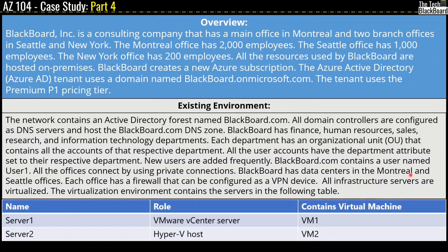All offices are connected by using private connections. Blackboard has a data center in the Montreal and Seattle offices. Each office has a firewall that can be configured as a VPN device. All infrastructure servers are virtualized. The virtualization environment contains two servers: Server1 is a VMware vCenter server and Server2 is a Hyper-V host. Server1 contains Virtual Machine 1 and Server2 contains Virtual Machine 2.